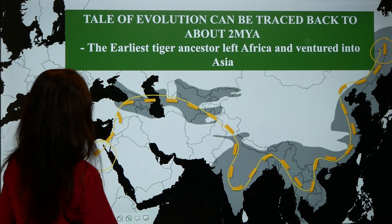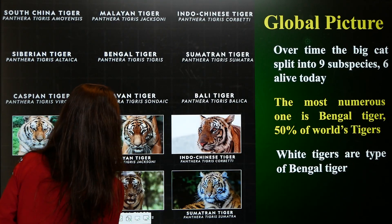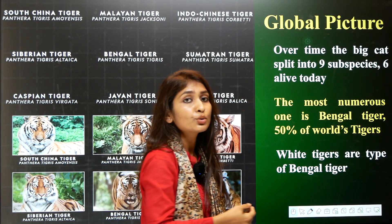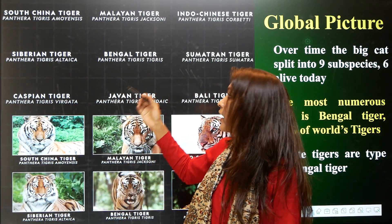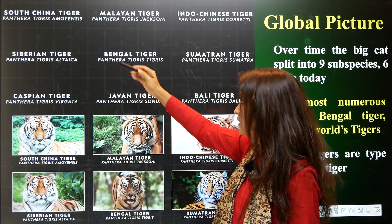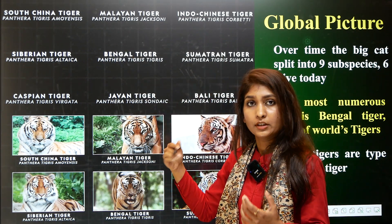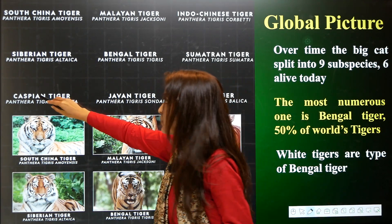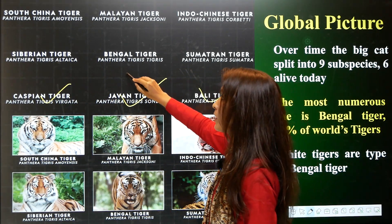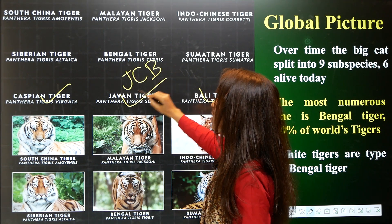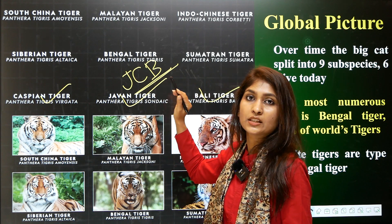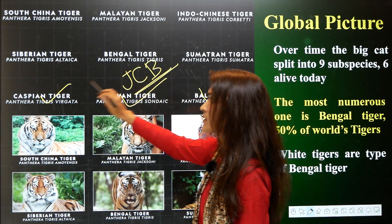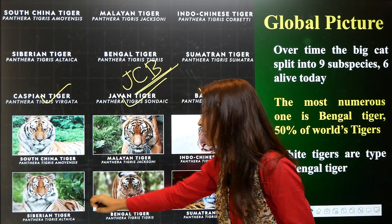During this evolutionary pattern, over time, the big cat split into nine subspecies. Among the nine subspecies, three are already extinct. The three extinct species are the Caspian tiger, Javan tiger, and Bali tiger. You can remember this as JCB — J for Javan, B for Bali, and C for Caspian. The remaining six are existing living tiger species.